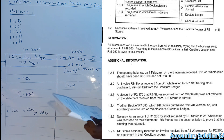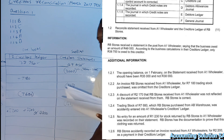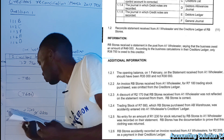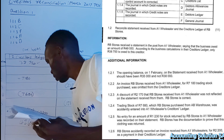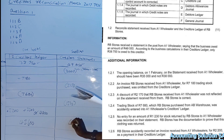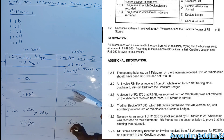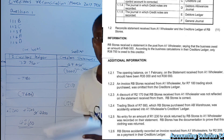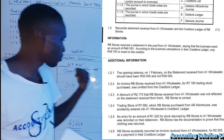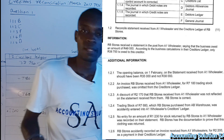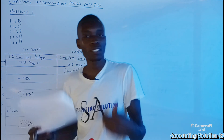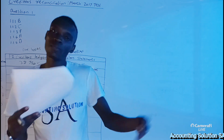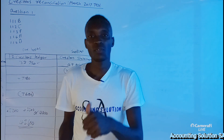Now let's calculate the totals. Both sides should give you R42,650. The creditors ledger side gives R42,650 and the statement side also gives R42,650. This is what we call a creditors reconciliation statement. This format appears frequently across exam papers, so make sure you also practice with other question papers from 2016 to 2023. See you in the next video.